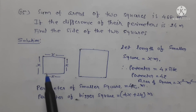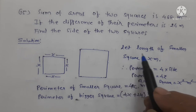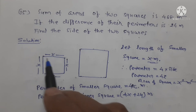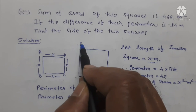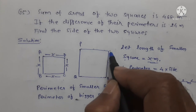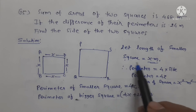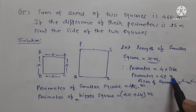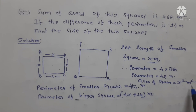Now we start the solution. Let the length of the smaller square equal x meters. The perimeter of the smaller square equals 4x meters. The area of the smaller square equals x squared square meters. The bigger square is labeled PQRS. The perimeter of the smaller square equals 4x.